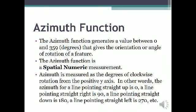The azimuth function generates a value between 0 and 359 degrees that gives the orientation or angle of rotation of a feature. Azimuth is measured as the degrees of clockwise rotation from the positive y-axis. In other words, the azimuth for a line pointing straight up is 0, a line pointing straight right is 90, a line pointing straight down is 180, a line pointing straight left is 270, etc.